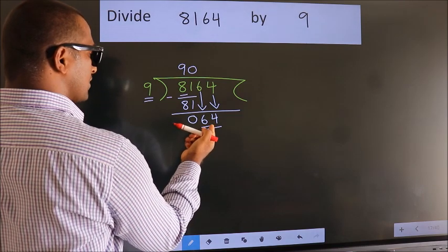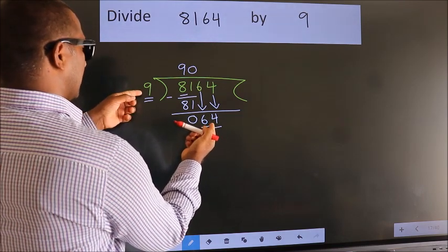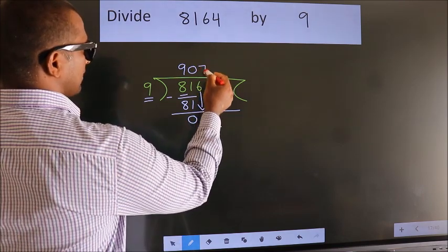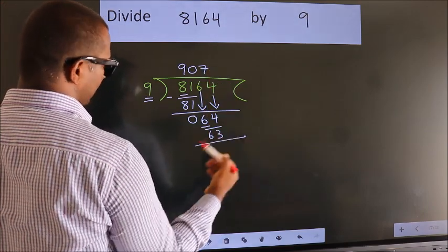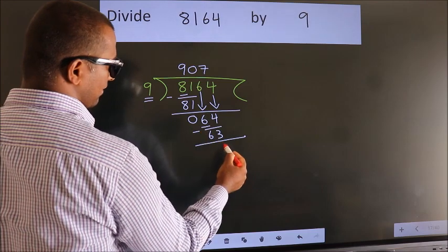A number close to 64 in the 9 table is 9 times 7, 63. Now we subtract. We get 1.